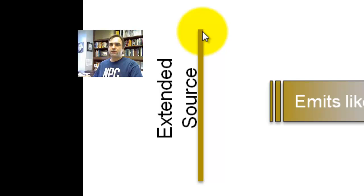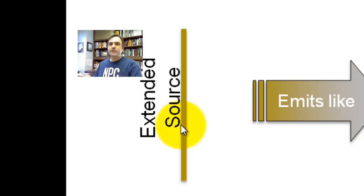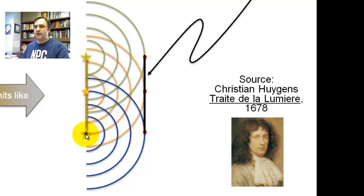So why are point sources important? Here is an extended source. So this is a piece of paper, a wall, anything. It's going to emit as if it were a bunch of tiny little point sources. What I've done is I've put three small point sources, top, bottom, and center.